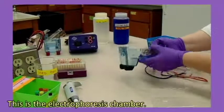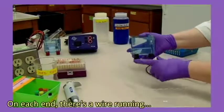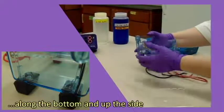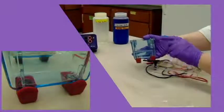This is the electrophoresis chamber. On each end there's a wire running along the bottom and up the side. The black end is the negative pole and the red end is positive.